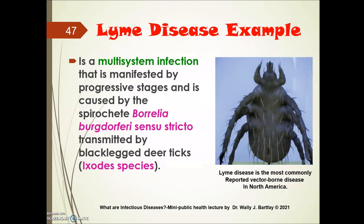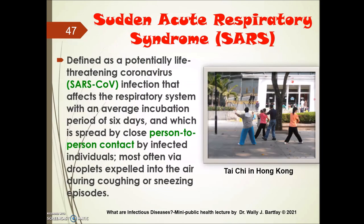Lyme disease is a multi-system infection manifested by progressive stages, caused by a spirochete pathogen transmitted by black-legged deer ticks. Lyme disease is in fact the most commonly reported vector-borne disease in North America currently. SARS — Sudden Acute Respiratory Syndrome — is defined as a potentially life-threatening coronavirus infection that infects the respiratory system with an average incubation period of six days, spread by close person-to-person contact via droplets expelled during coughing, sneezing, exercise, or even singing.